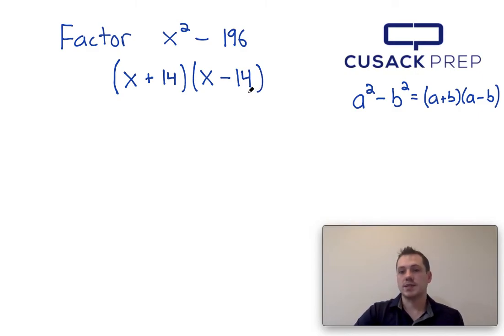And you also do the square root of the first term minus the square root of the second term. So essentially, x plus 14 times x minus 14. And that's how you factor x squared minus 196. Thank you for watching.